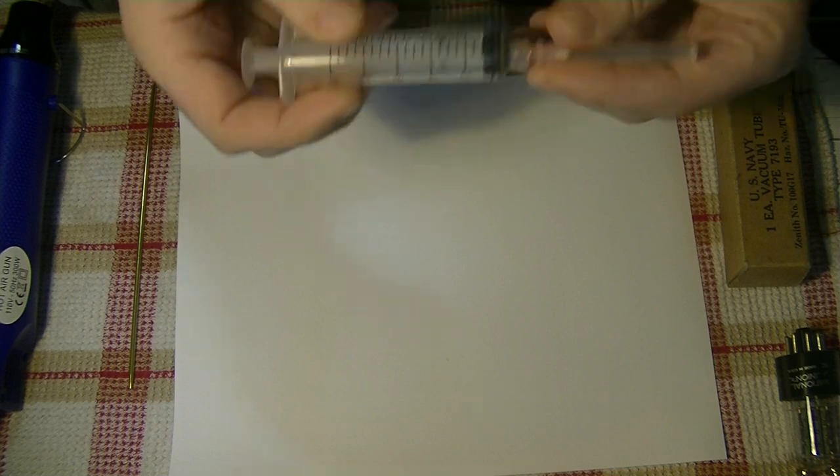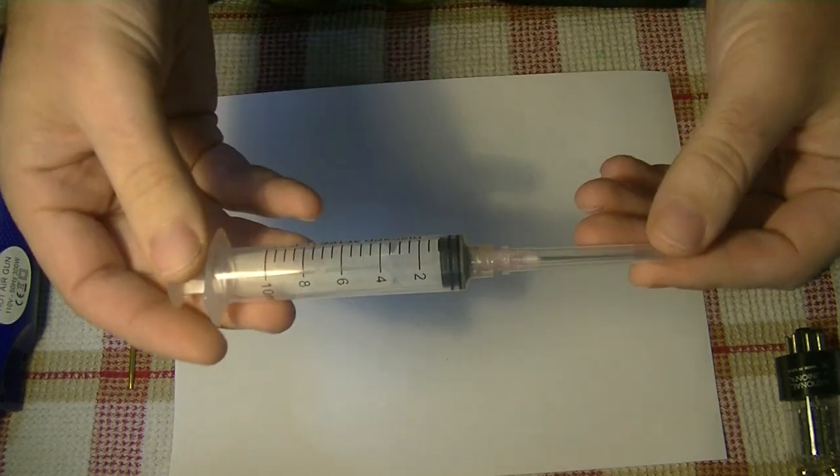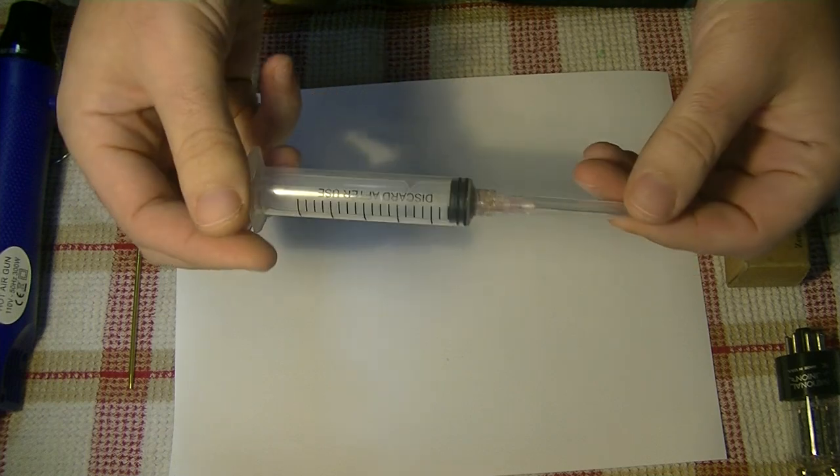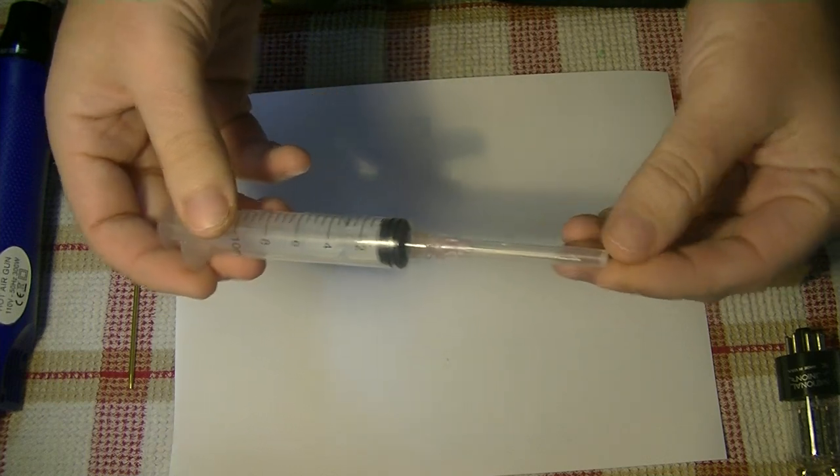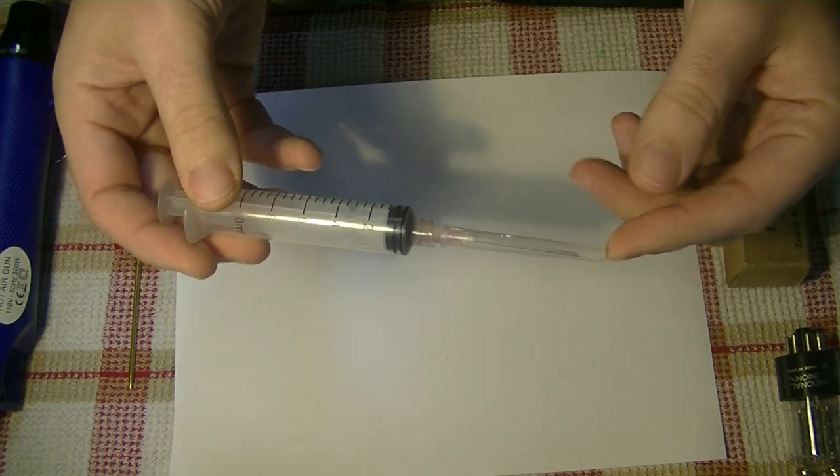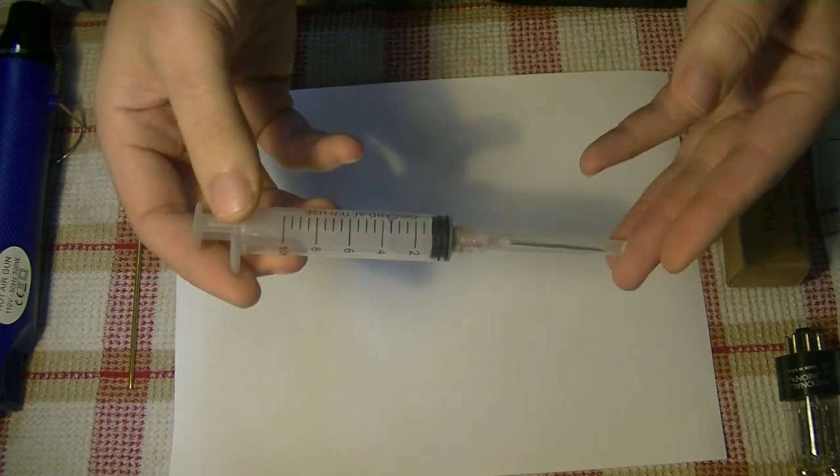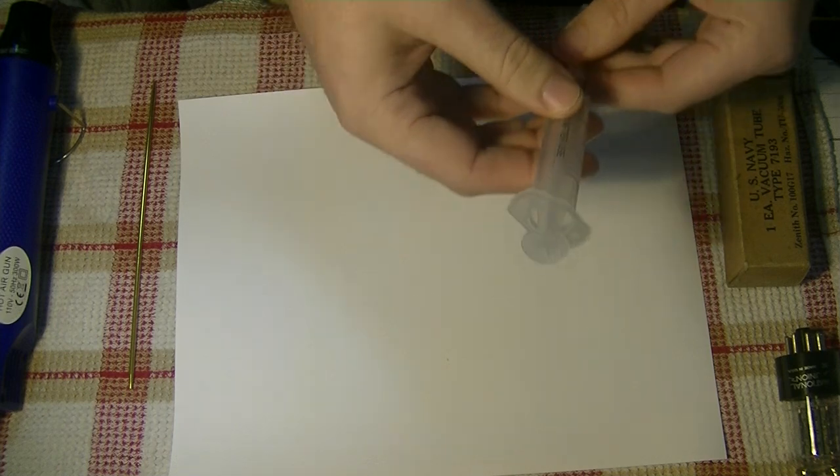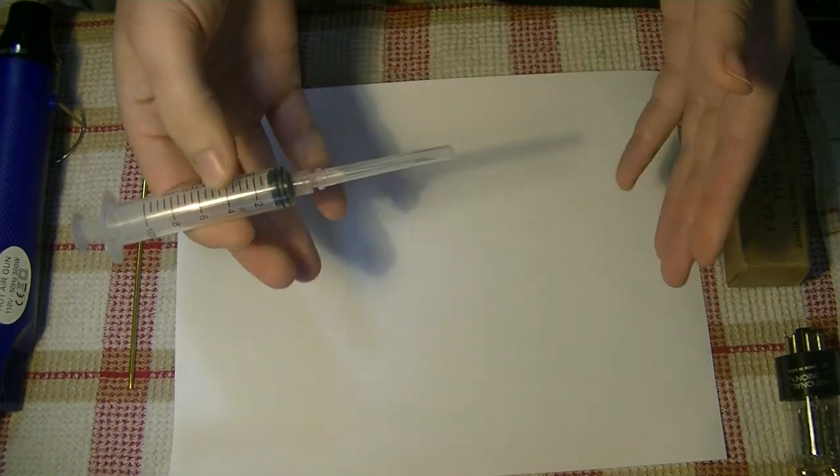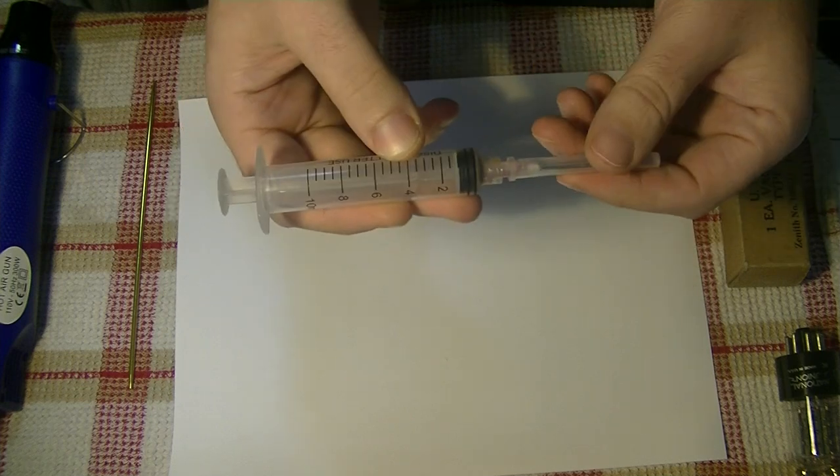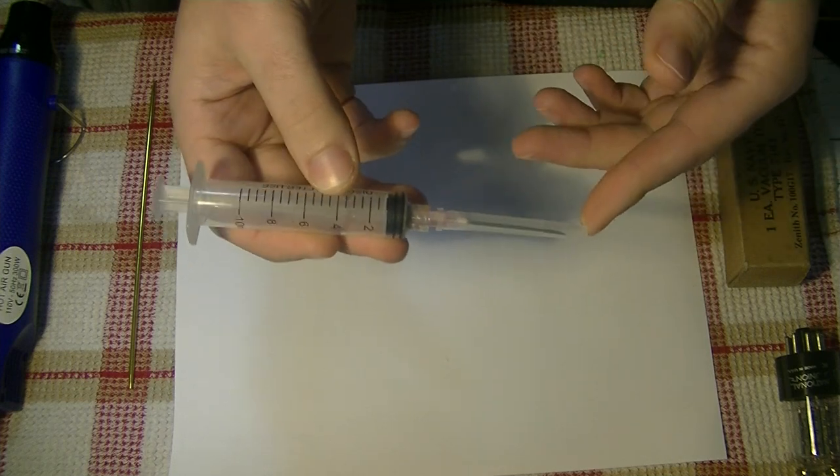Next we need syringes. These might be hard to find locally, but we ordered a set off of Amazon and they worked out pretty well. This is an 18-gauge syringe. You don't want it to be too small, otherwise it'll be too easy to clog it, and we'd like to be able to reuse these in the future. And I shouldn't have to say it, but obviously this is a puncture hazard. Be careful with these. Treat it as if it were a sharp knife.